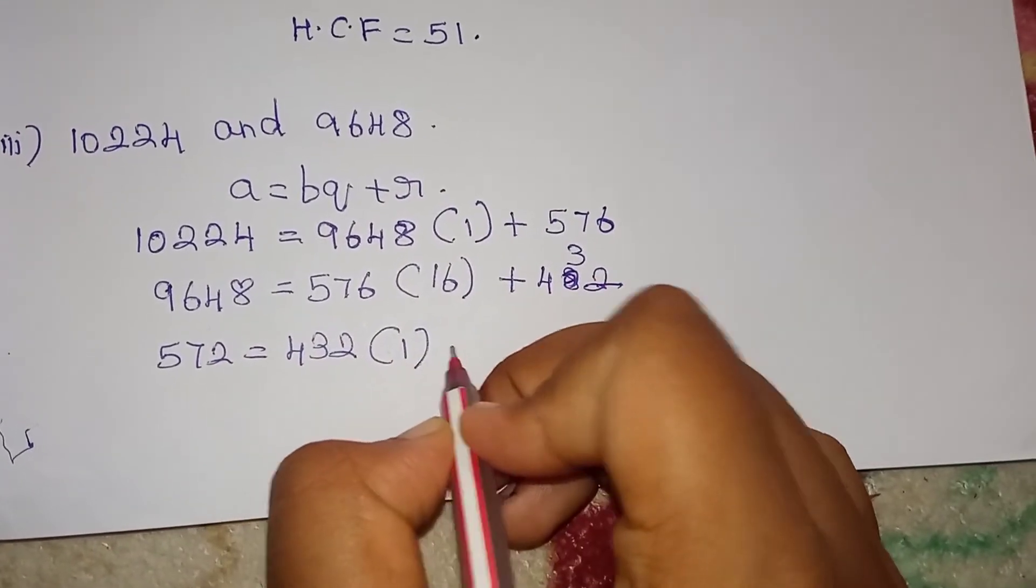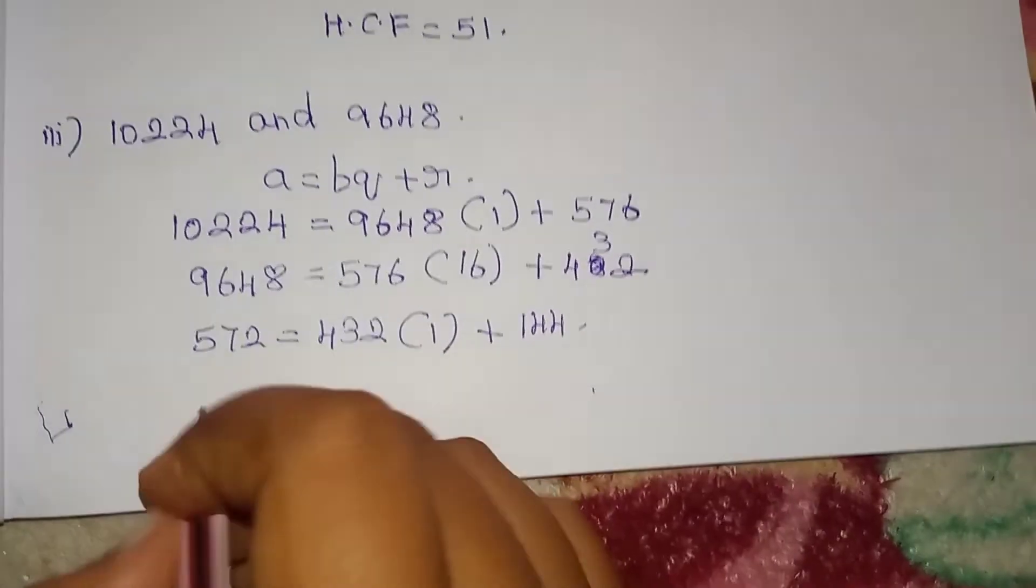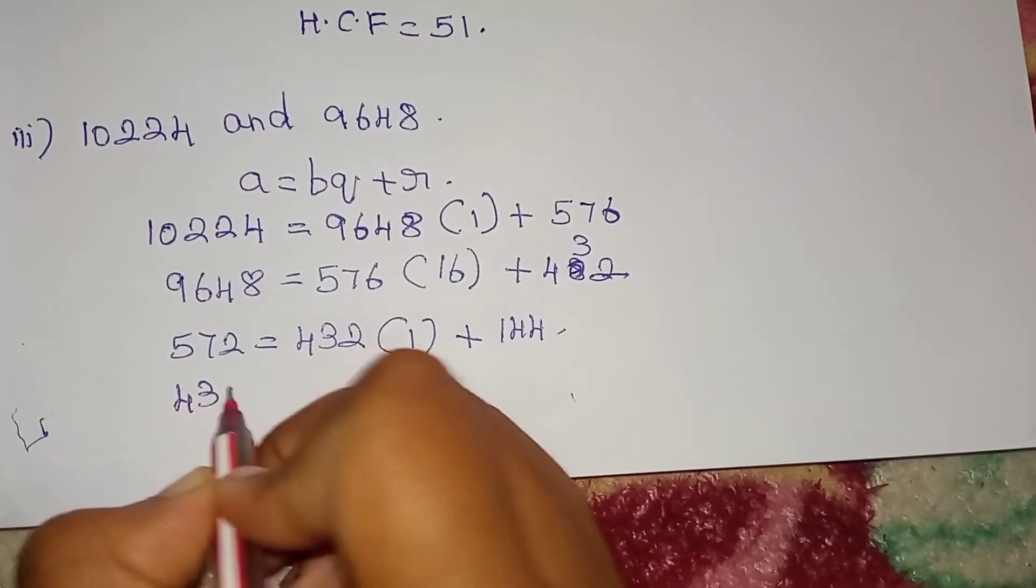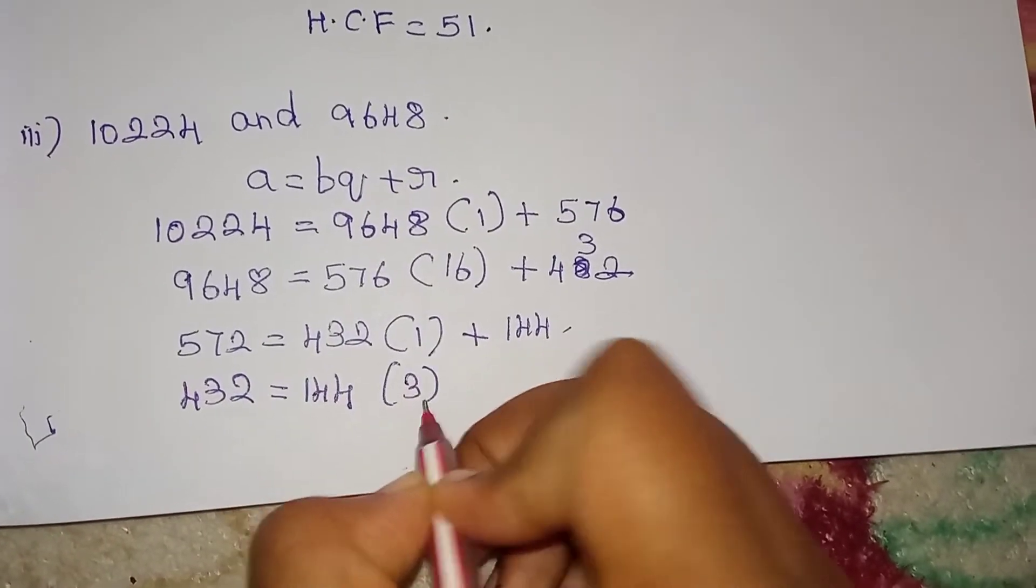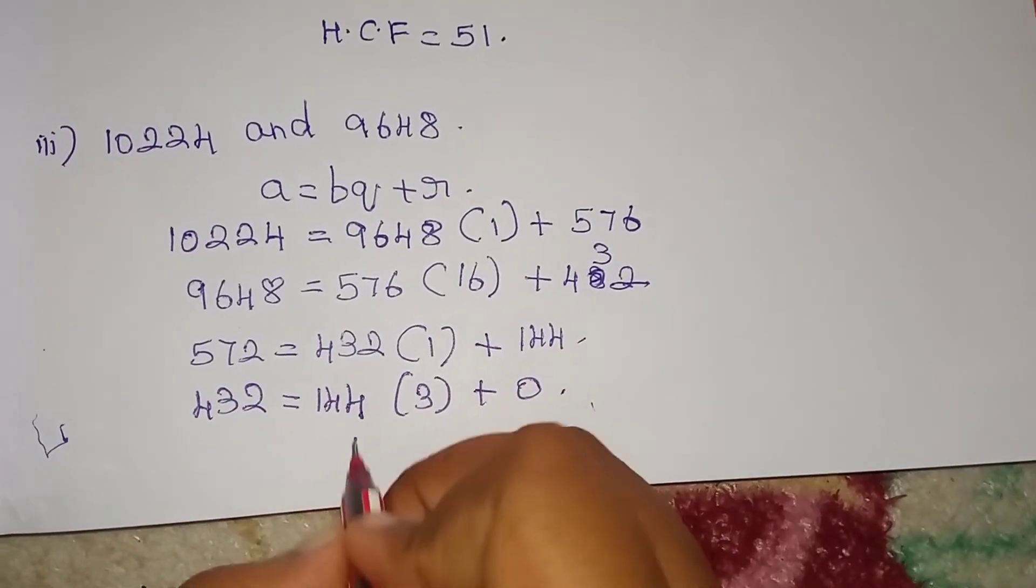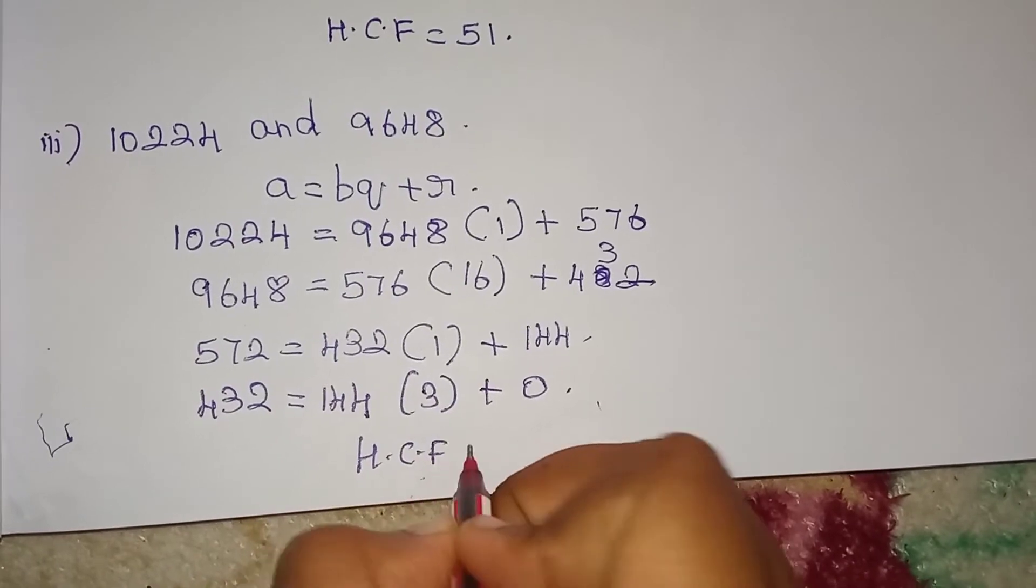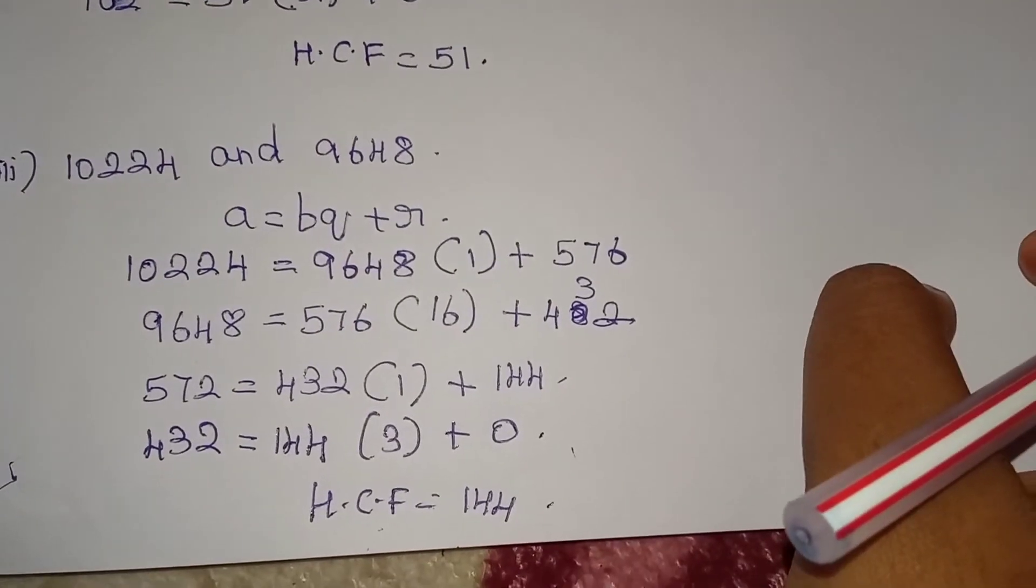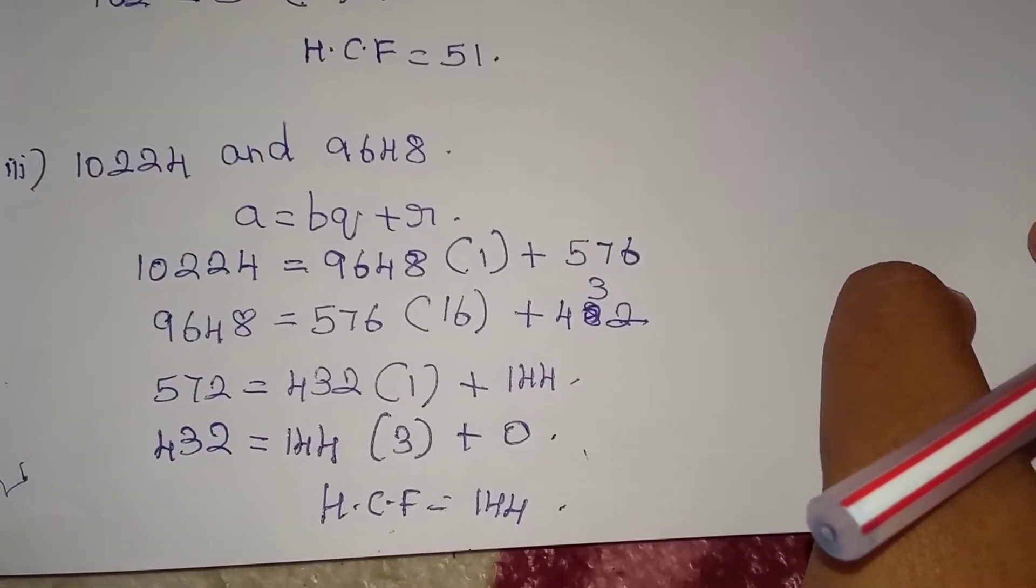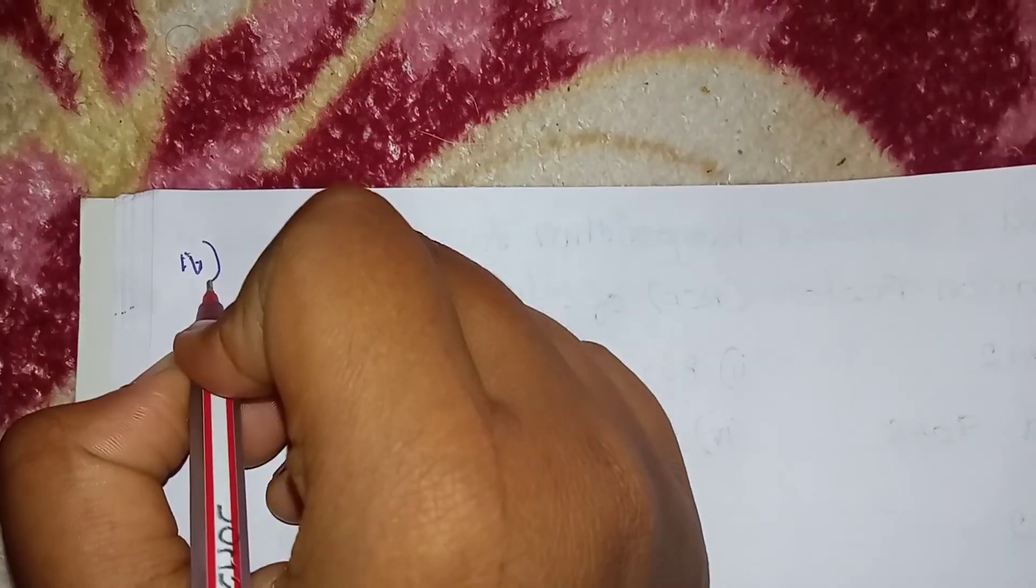432 times 1, remainder 144. 432 is equal to 144 times 3, remainder 0. The HCF is equal to 144.